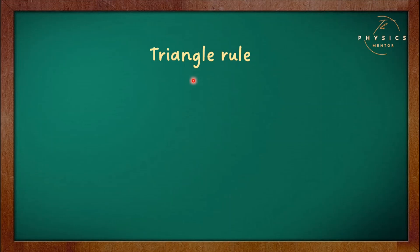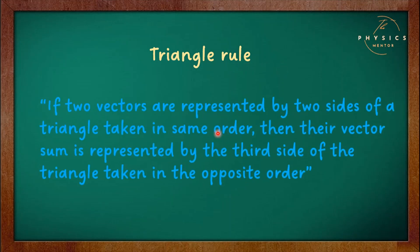In this video, first we talk about the triangle rule of vector addition. According to the triangle rule of vector addition, if two vectors are represented by two sides of a triangle taken in the same order, then their vector sum is represented by the third side of the triangle taken in the opposite order.